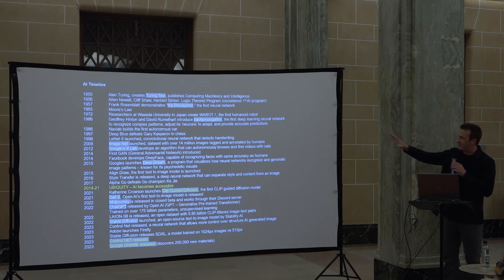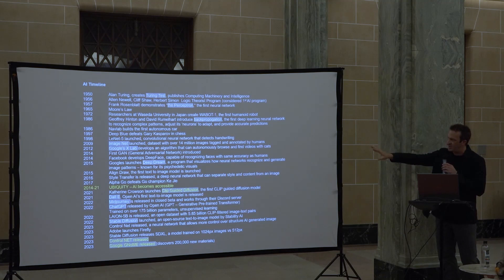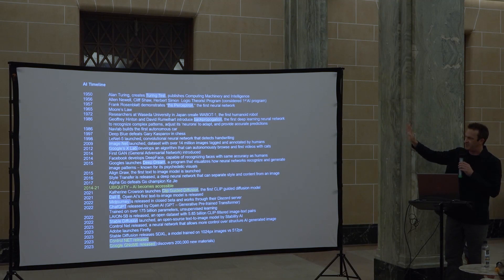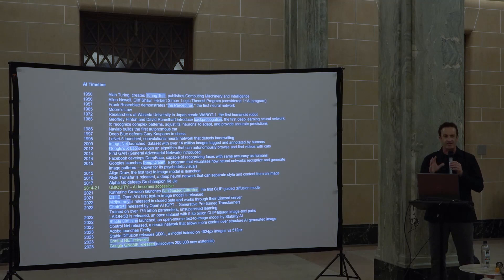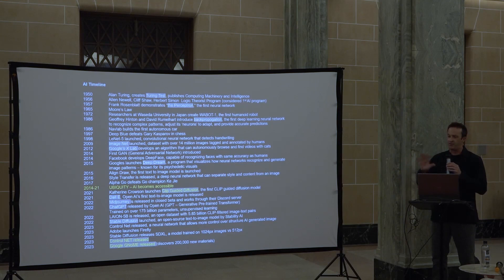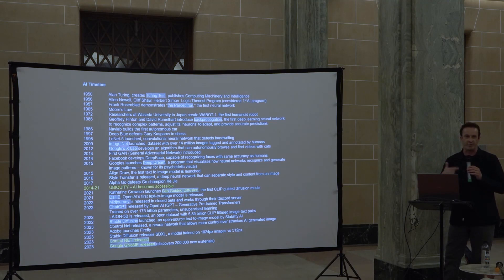Since then, a lot of different developments have happened — all these things until Deep Dream — and it was really a slow, very technical process of development all the way up until about 2014 to 2021, when AI became ubiquitous and started to be accessible to people outside the technical world. But in 2021, Catherine Croson introduced clip-guided diffusion, and that changed everything. That's the diffusion text-to-image model you see today, and it influenced large language models. All of the work people are doing now in a very accessible way has to do with clip-guided diffusion.